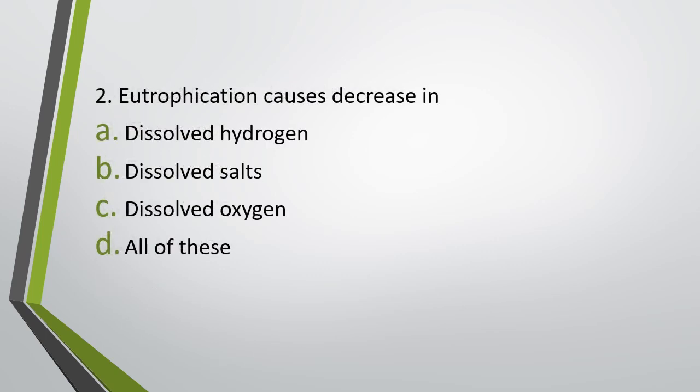Question number two: Eutrophication causes decrease in — (a) dissolved hydrogen, (b) dissolved salts, (c) dissolved oxygen, or (d) all of these. Eutrophication causes a decrease in...